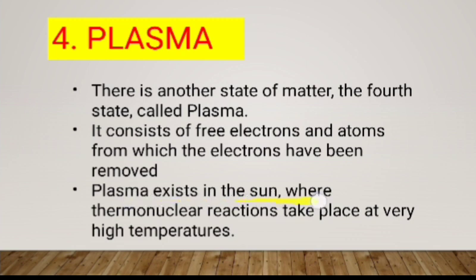Plasma exists in the sun, where thermonuclear reactions take place at very high temperatures. At such high temperatures, electrons are stripped from atoms, creating a plasma of free electrons and positive nuclei with both positive and negative charges present.